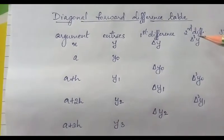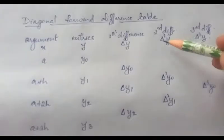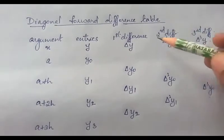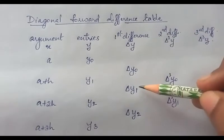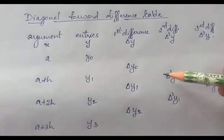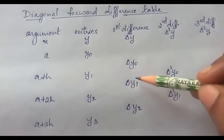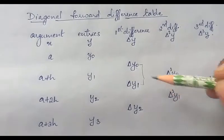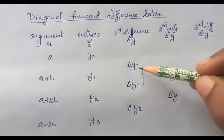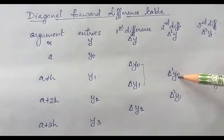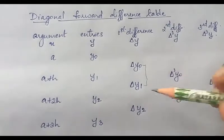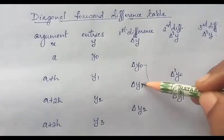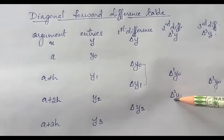The second forward differences are denoted by the symbol delta squared y. The second forward differences are the differences of the first forward differences. That is, the first value of the second difference will be the difference between delta y1 and delta y0. So delta y1 minus delta y0 is equal to delta squared y0. Like that, delta y2 minus delta y1 is delta squared y1.